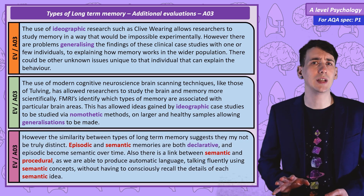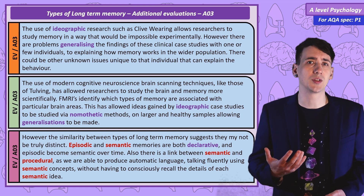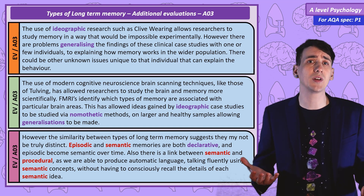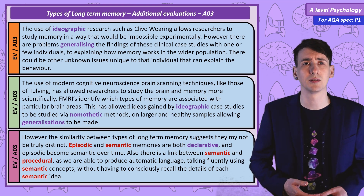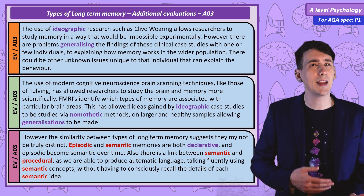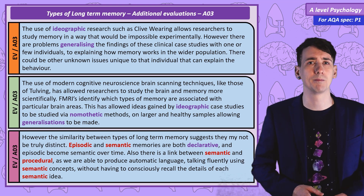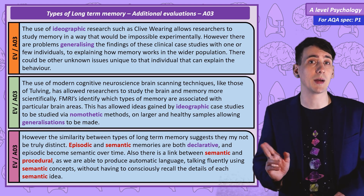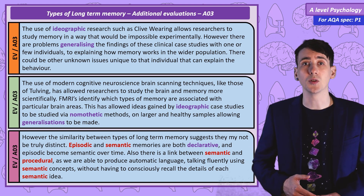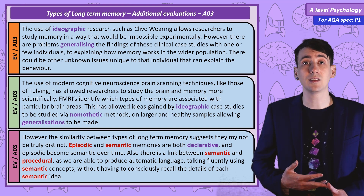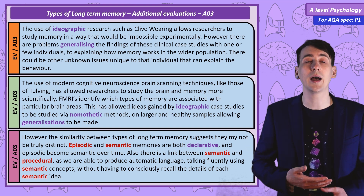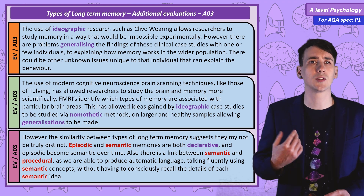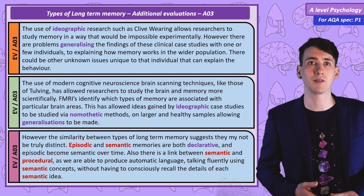However, there are reasons to argue that there may not be such a clear-cut separation between the different types of long-term memory. Firstly, episodic and semantic memories are both declarative. Also, episodic memories tend to become semantic memories over time. Additionally, there is a strong connection between procedural and semantic memory, as we are able to produce automatic language — the fact that we can fluently talk using a wide range of semantic facts and concepts quickly, without having to consciously consider and recall every semantic fact.